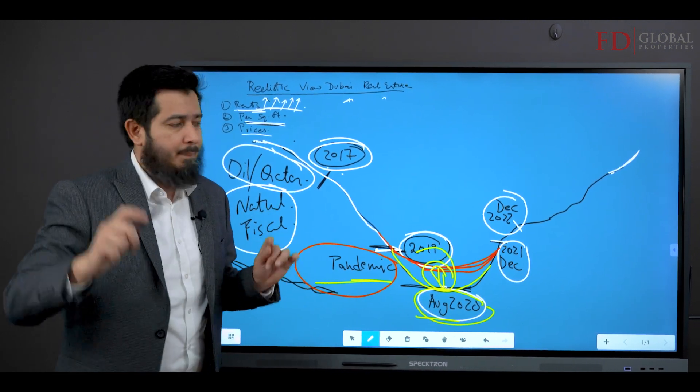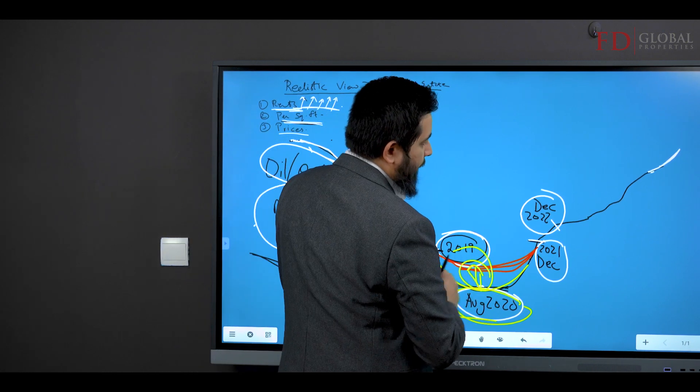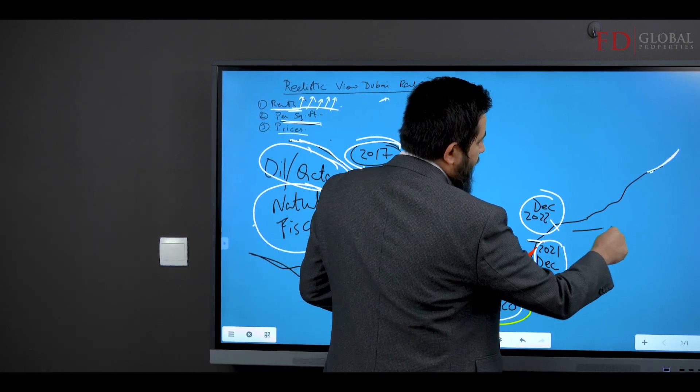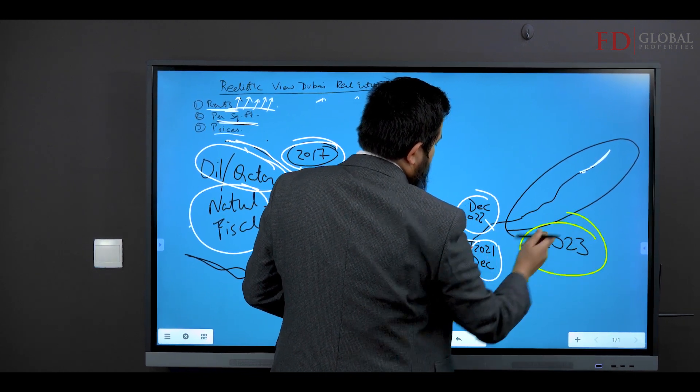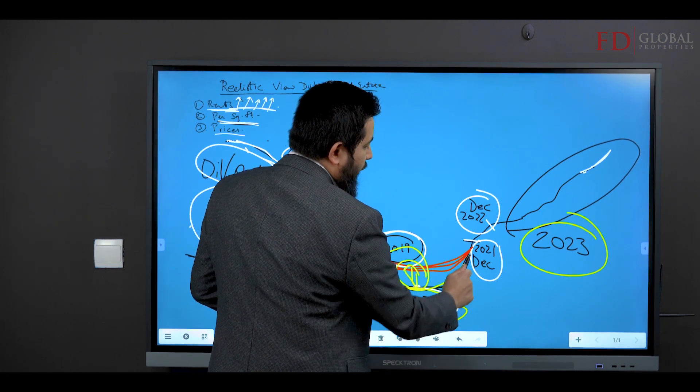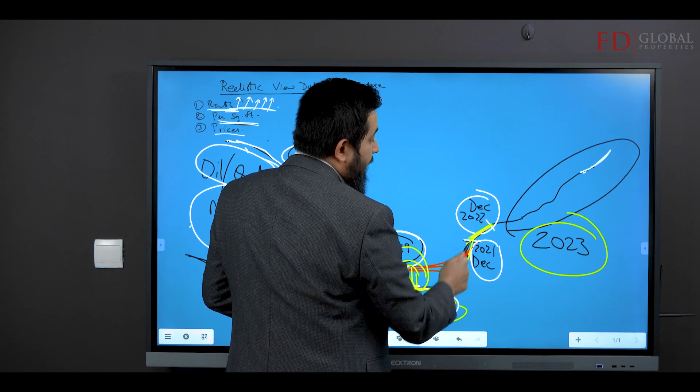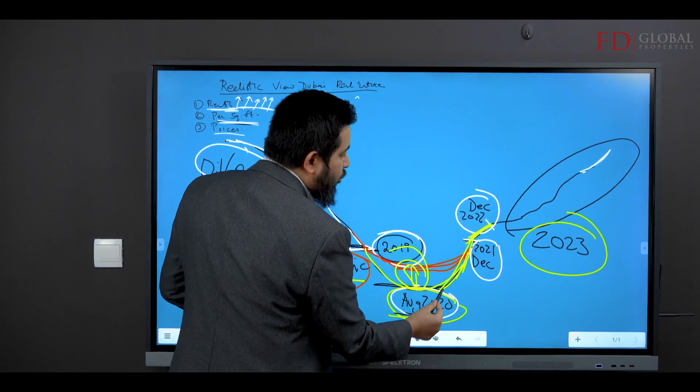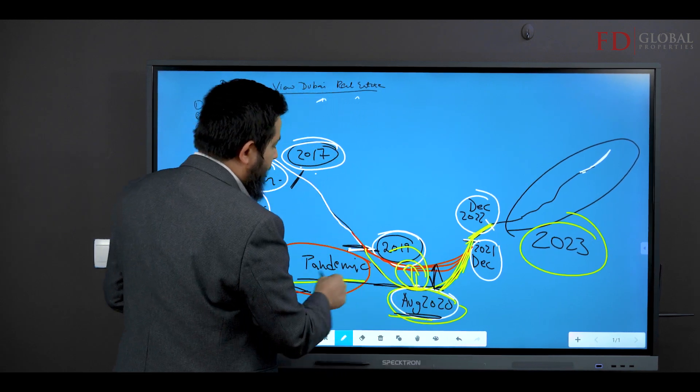And now what happened is because of the pandemic, the prices shot up. This is what I'm thinking is going to be happening in 2023. Right after August 2020, prices shot up over here. 2022, they kept going up. The reason they shot up is because they went dramatically lower during the pandemic, right?